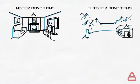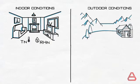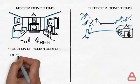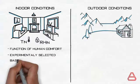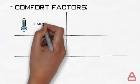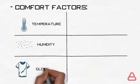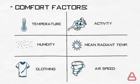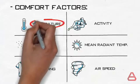The indoor conditions are indoor temperature and humidity, and are mainly a function of human comfort. They have been experimentally selected based on the aim of providing the best comfort for the dwellers of a certain building or space. Comfort is affected by multiple factors such as temperature, humidity, clothing, activity, mean radiant temperature, and airspeed. But the most practical parameters to control and those with the largest effect are temperature and humidity.